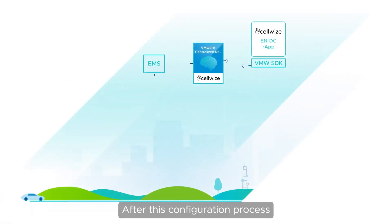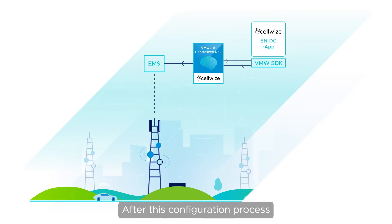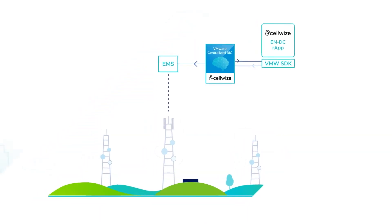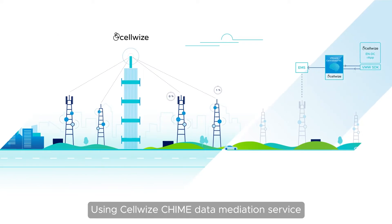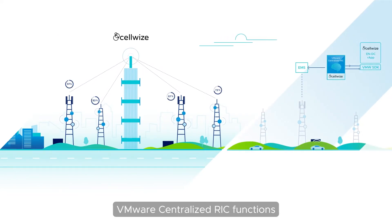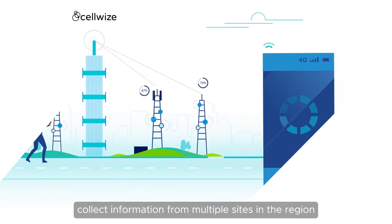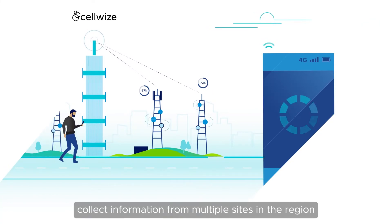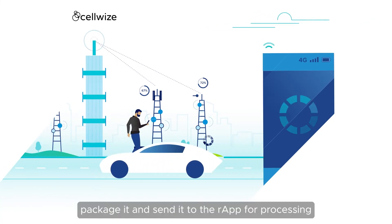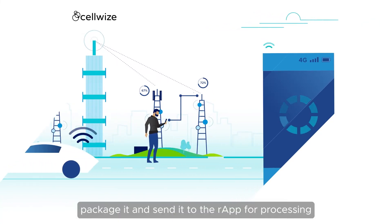After this configuration process, the app is now ready for automatic execution. Using CellWise QIIME data mediation service, VMware Centralized RIC functions collect information from multiple sites in the region, package it, and send it to the R-App for processing.